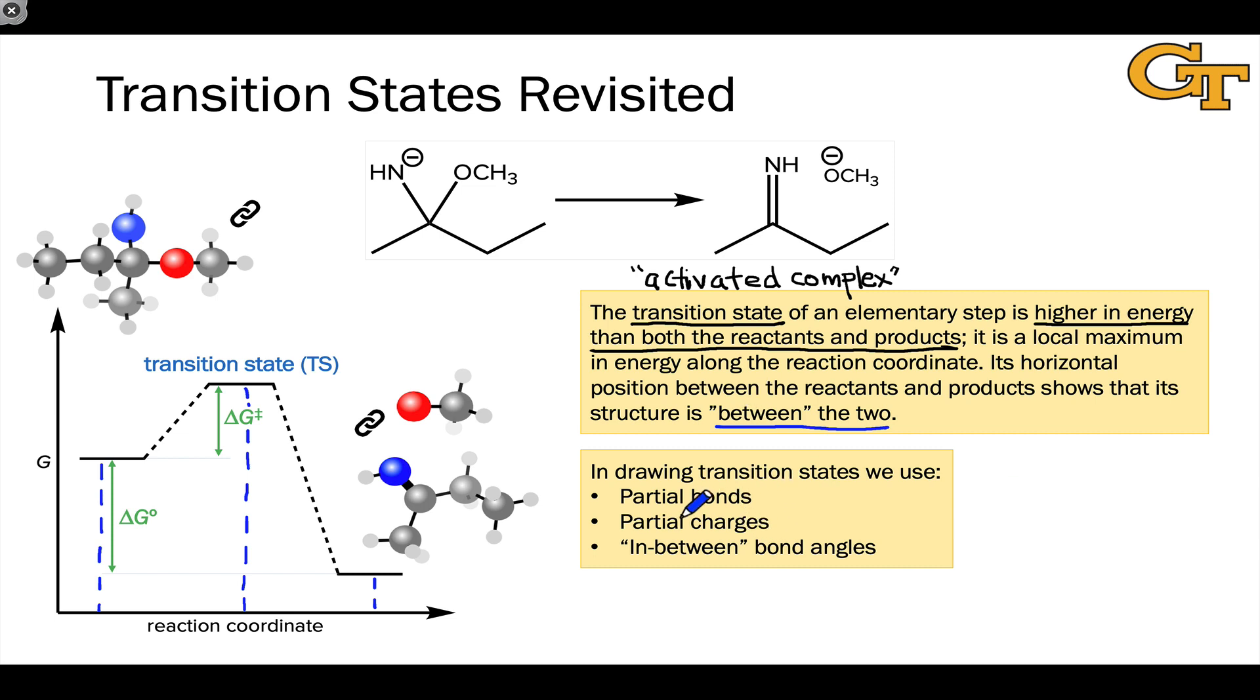For example, we use partial bonds. This means using dotted lines to represent a bond that's in the course of breaking or forming, that has a partial bond order at the transition state.